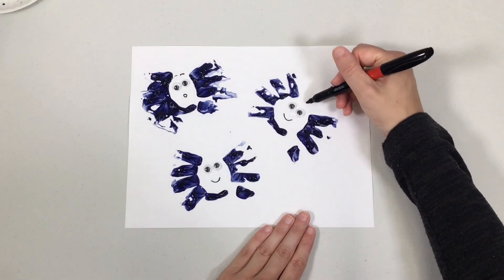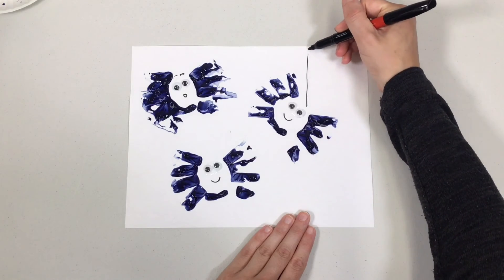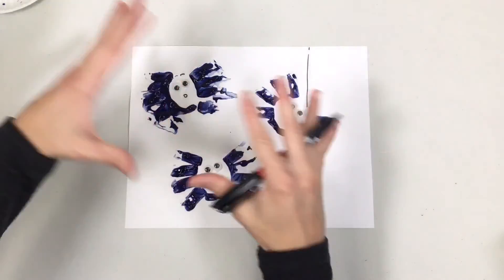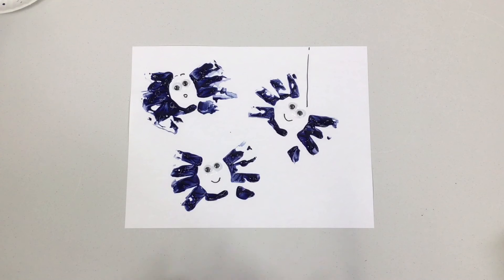You could also take and draw some spider web. Maybe this guy's coming down, or if you want to do a whole spider web, you could do that even before you stamp. There's all kinds of things you can do with this.